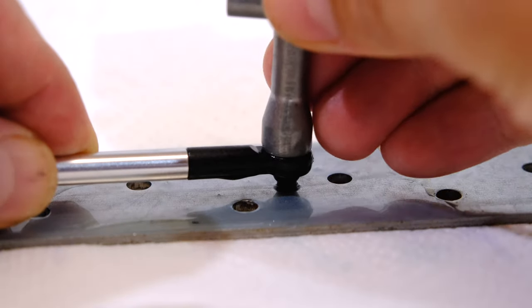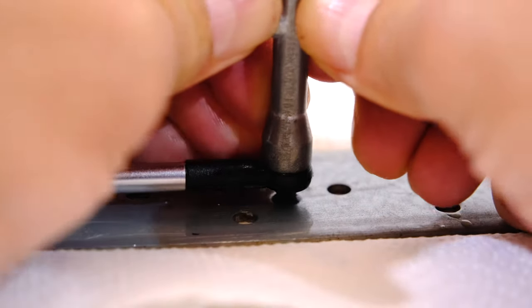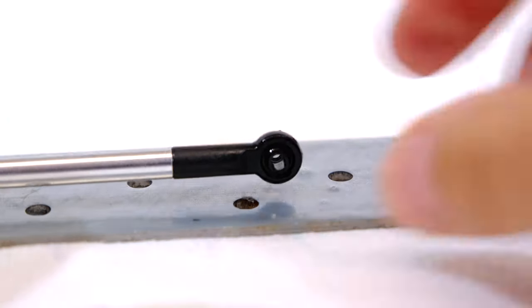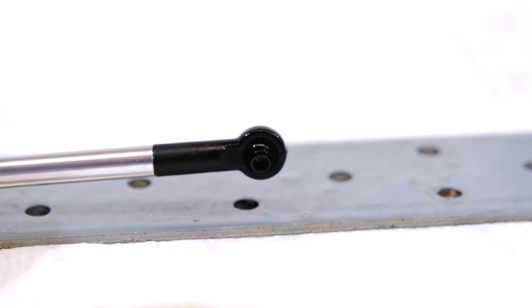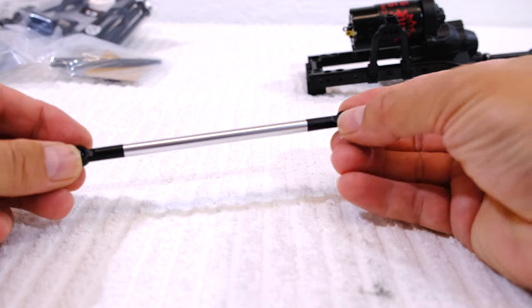Here I insert the ball into the connector. I use a little bit dry lubricant to reduce friction on these parts. The first link is finished.